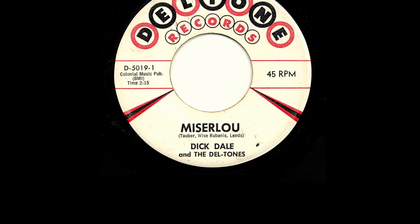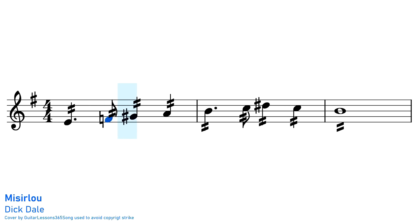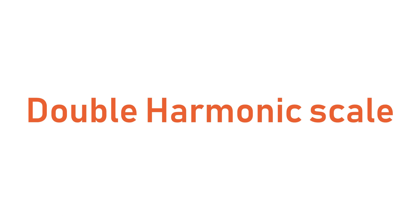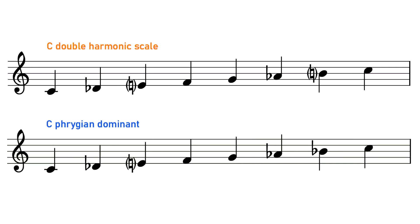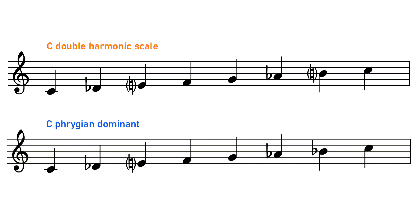A song often wrongly cited as being in Phrygian Dominant is Dick Dale's version of Misirlou. Misirlou actually uses a very similar scale known as the Double Harmonic Scale, which is almost identical to the Phrygian Dominant, apart from having a raised leading tone — a raised seventh. However, interestingly, even though Dick Dale's version of Misirlou is not using the Phrygian Dominant scale, Misirlou is actually a traditional folk melody and some versions of that traditional melody do use the lowered seventh degree of Phrygian Dominant.